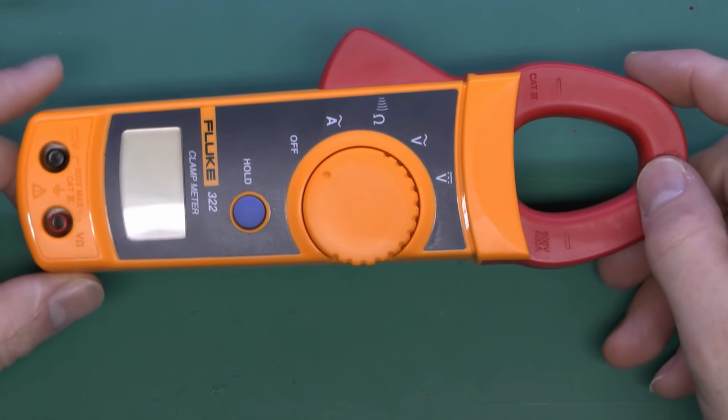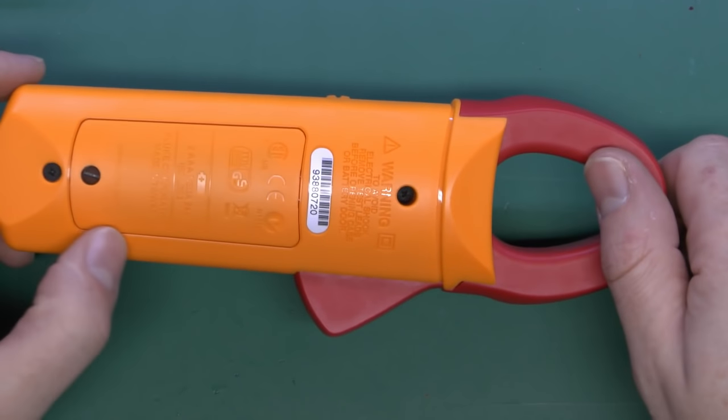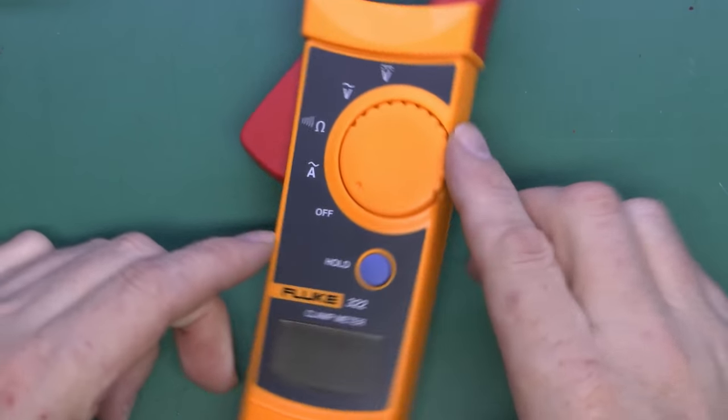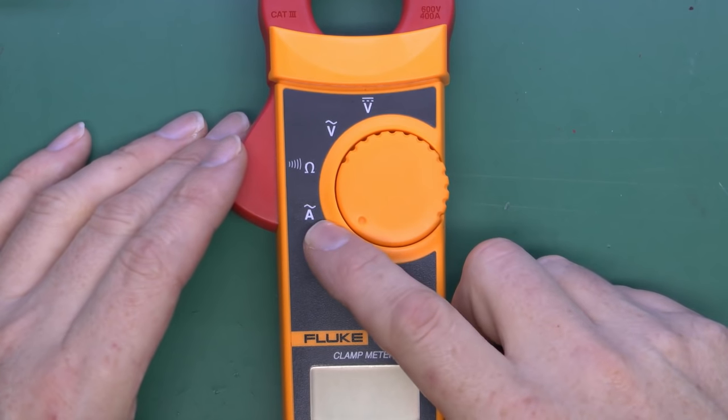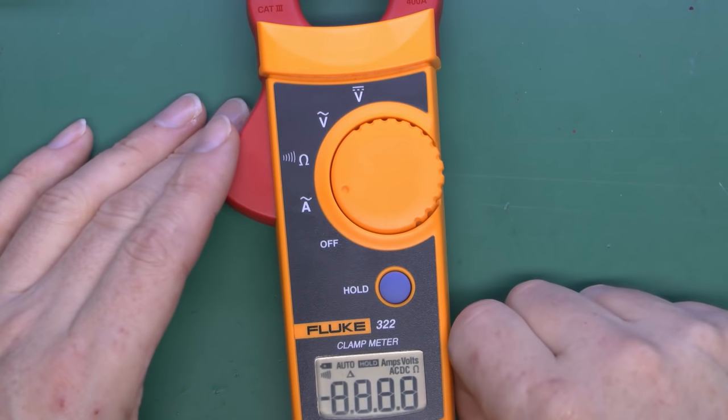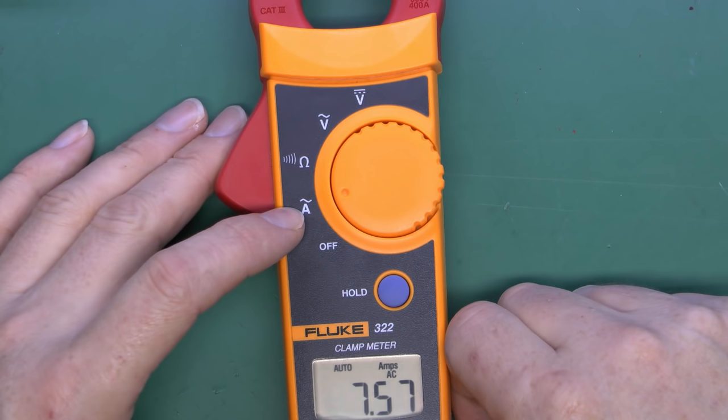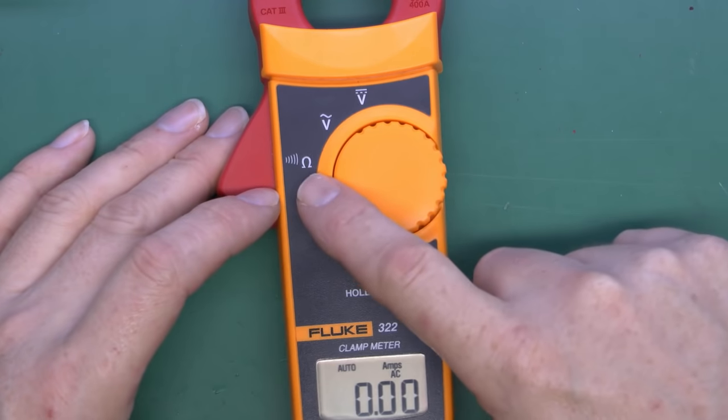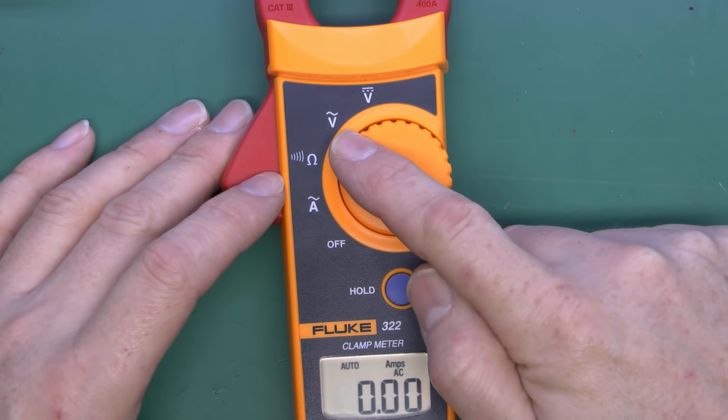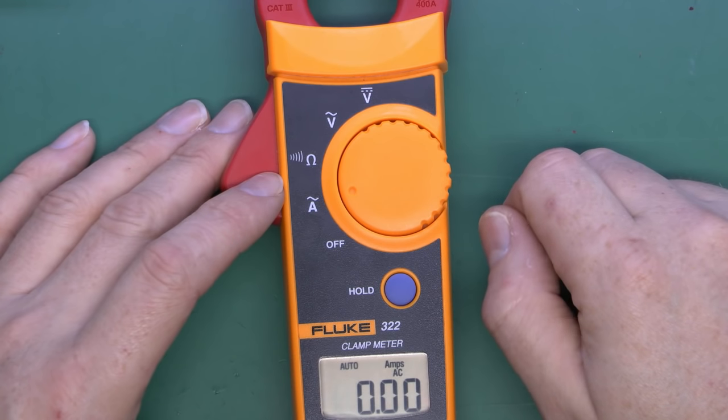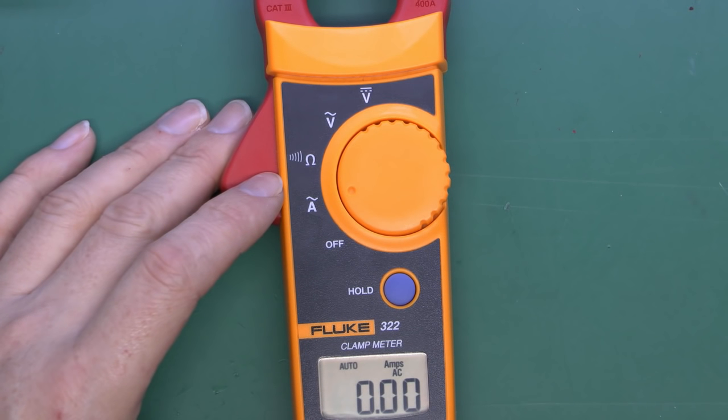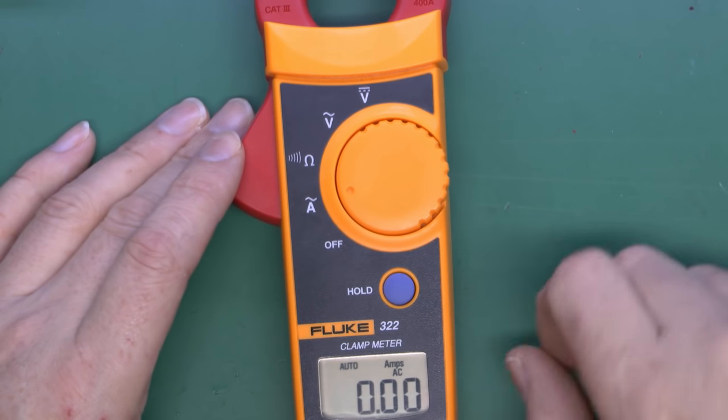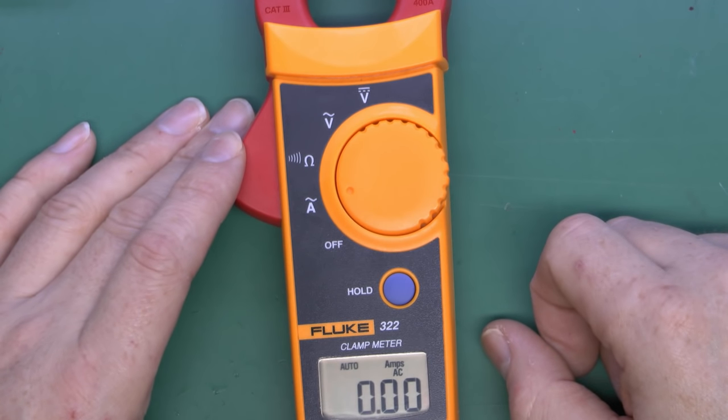Here we have a fairly typical example of a clamp meter, battery powered in this case. On the front here we've got the various settings, so we've got basically off at the moment there, current which is its primary function, and this is for AC current only. This particular one does have some connections at the bottom which can also be used for measuring things like resistance and also voltage, so voltage AC and voltage DC, but those require that you connect test leads to the bottom here. Its main function though is on the amps range, and you can see it's showing zero at the moment because obviously there's nothing connected to it.